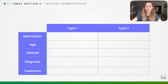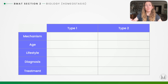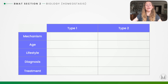In diabetes mellitus the body struggles to reduce blood glucose levels after, for example, a meal. Blood glucose levels stay too high, which can lead to hyperglycemia — a condition that can be really dangerous if left untreated.